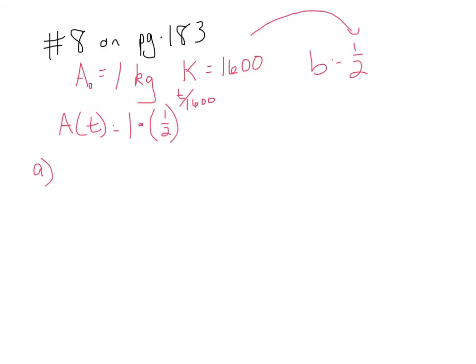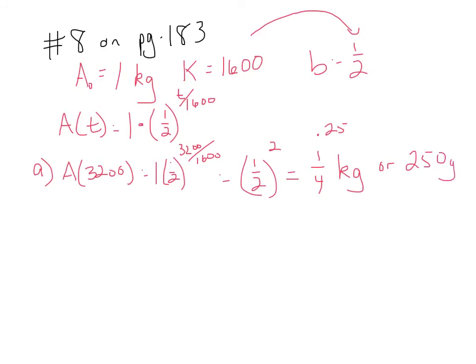Part a says how much substance will you have after 3200 years? Well, you'd have 1 times 1 half to the 3200 over 1600 power. That's just 1 half to the second power. That's 1 fourth. You'd have 1 fourth of a kilogram or 0.25 kilograms or multiply it by 1,000 to get grams, 250 grams because there's 1,000 grams in a kilogram. Well, that makes sense. If it takes 1600 years to be cut in half, then what's half of a half? Well, it's a fourth. It'll take 3200 years to be cut into fourths.